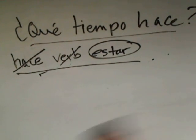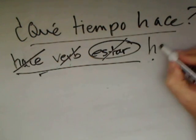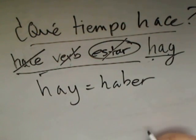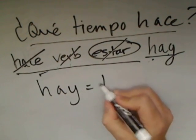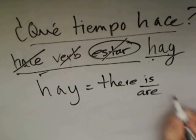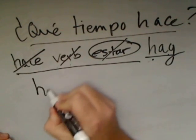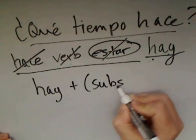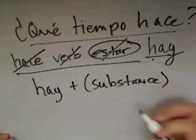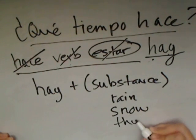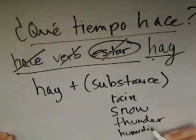All right, so that takes care of estar. Let's look at expressions that work with hay. Remember that hay is a form of haber, and it basically means there is or there are — talking about the existence of something. So when someone asks us about the weather, we use hay plus what I'd call a substance. That substance might be rain, snow, thunder, or humidity. In other words, we use hay plus a noun.